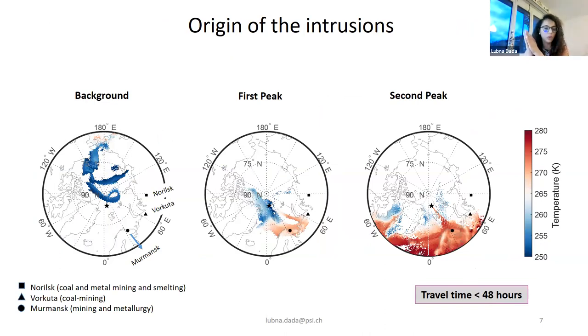The figure to the left, the most left is the background conditions of the central Arctic Ocean. The star is where the ship was, which is in the center or in the North Pole. And then this first peak of the warm air mass intrusion arrived, as you can see from here. And I have pointed three points on the map here, which are in Eurasia or in Northern Europe and Asia, the Kola Peninsula, and two other locations. And these locations are known for their coal and metal mining industries.